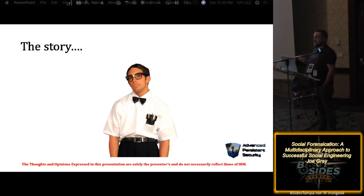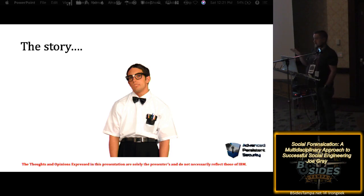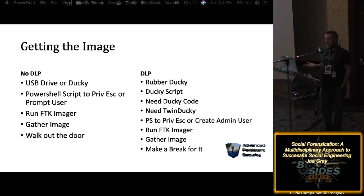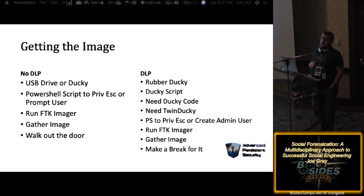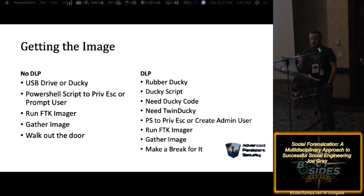As with any social engineering engagement, you need a solid pretext. Make sure your story is airtight — rehearse it. When I teach a social engineering course, one of the labs I do is give the class five minutes to come up with a persona, a backstory, a current story, and what you're trying to do. Then I take volunteers to get in front of the class and defend that persona for two minutes — people grill them on their backstory, whether they know this person or that person. You just have to learn to improv and go with it to make it sound believable. If they use DLP, meaning the thumb drive won't work as-is, you're going to have to use a ducky.